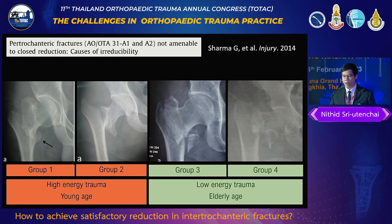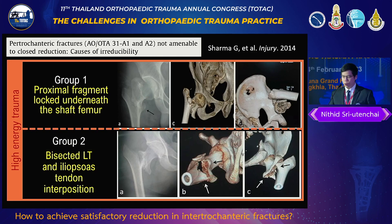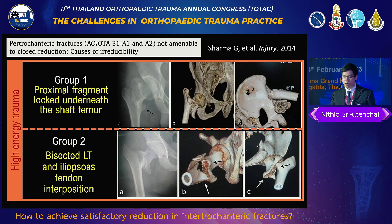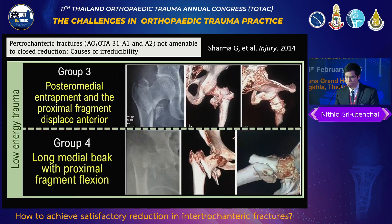Dr. Sharma classified irreducible intertrochanteric fractures into four groups. The first and second groups involve high-energy trauma in young populations. In group one, the lesser trochanter is intact on the distal fragment, and the proximal fragment is locked underneath the femoral shaft. In group two, the lesser trochanter is bisected and there is iliopsoas tendon interposition.